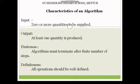Input: the input of an algorithm is zero or more quantities to be supplied — input is at minimum zero. Second, output: at least one quantity is produced. So output means at least one quantity is produced.